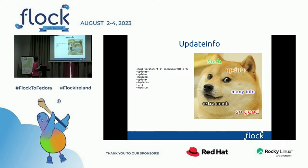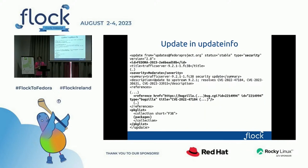Let's go to the update info once more. It's like "updates" at the top level, and inside there is the "update." It's simple XML. The update info — I compacted it as much as I can. The important part is you have the type — as I said, enhancements, security, bug fixes. You have the ID, the severity, the references — this is an extremely important part — and you have the packages list with the collection.